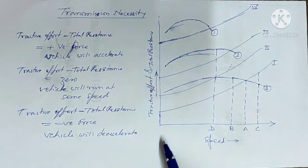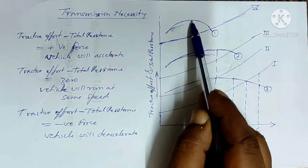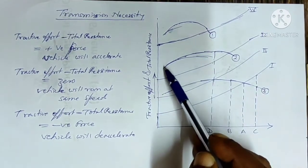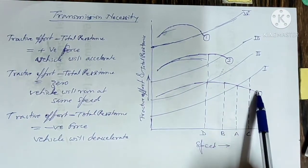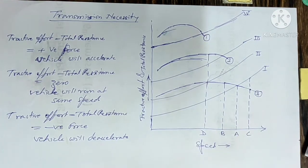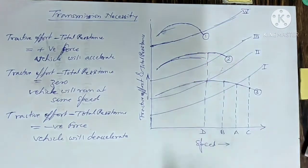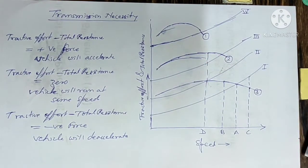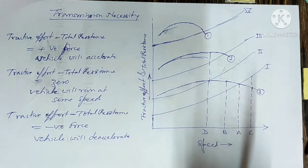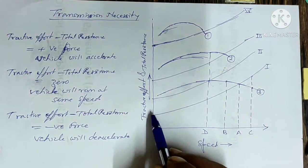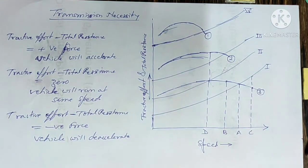Here in the graph, you can see this is the tractive effort graph — the tractive effort when the vehicle is in first gear, this is the tractive effort of the second gear, and this is the tractive effort of the third gear for different speeds. And these are the total resistance curves. Total resistance is the sum of miscellaneous resistance, gradient resistance, and wind resistance. The wind resistance is a curve which is proportional to the square of the velocity.